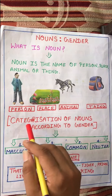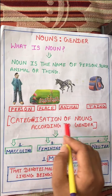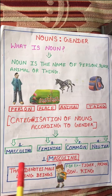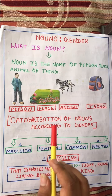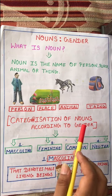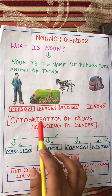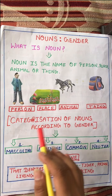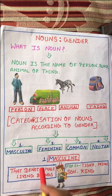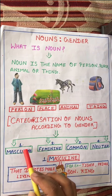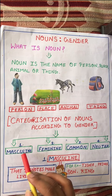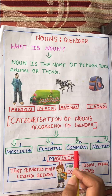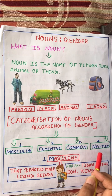Now we will learn the most important topic for today: the categorization of nouns according to gender. Noun ko hum gender ke according bhi categorize kar sakte hain. There are four types of gender: first, masculine; second, feminine; third, common; and the fourth is neuter gender. We will learn each one separately.